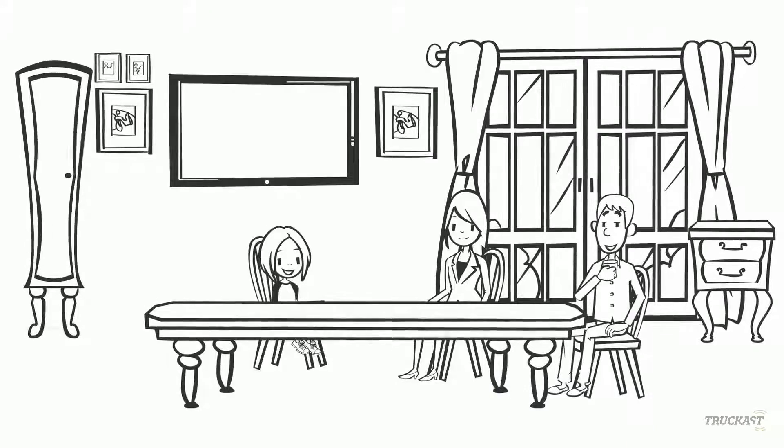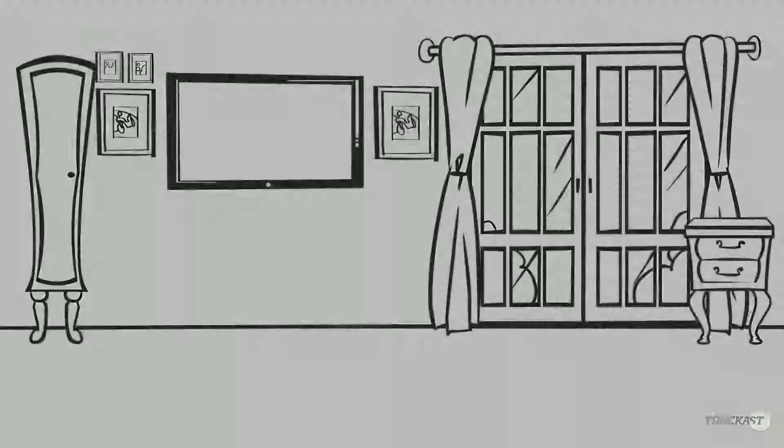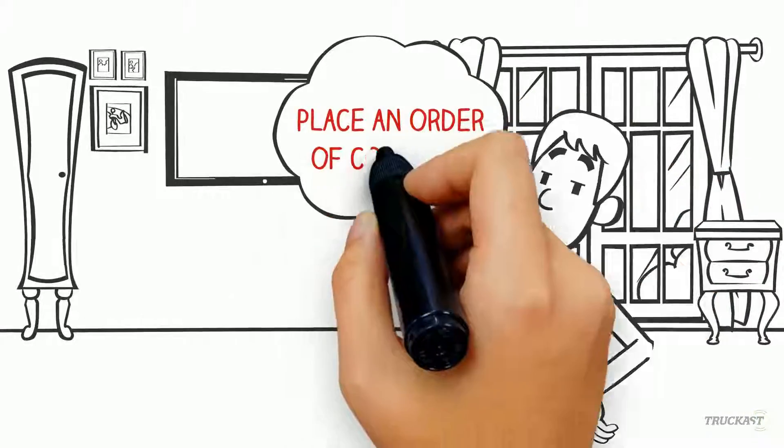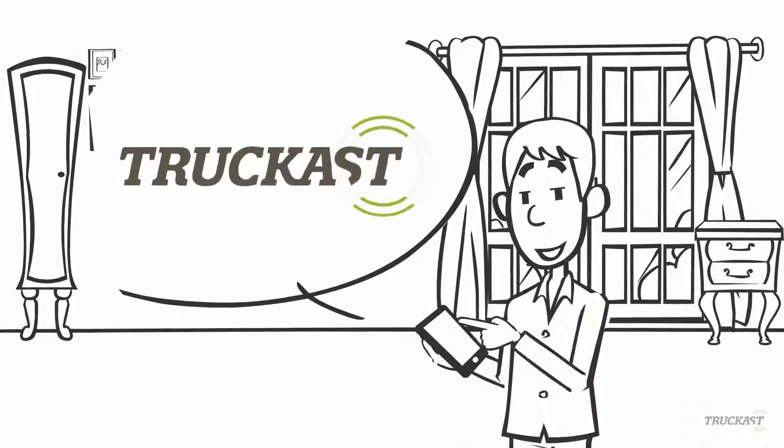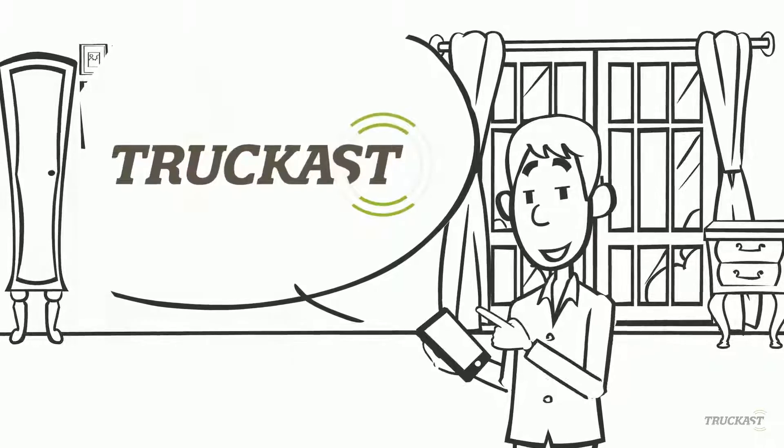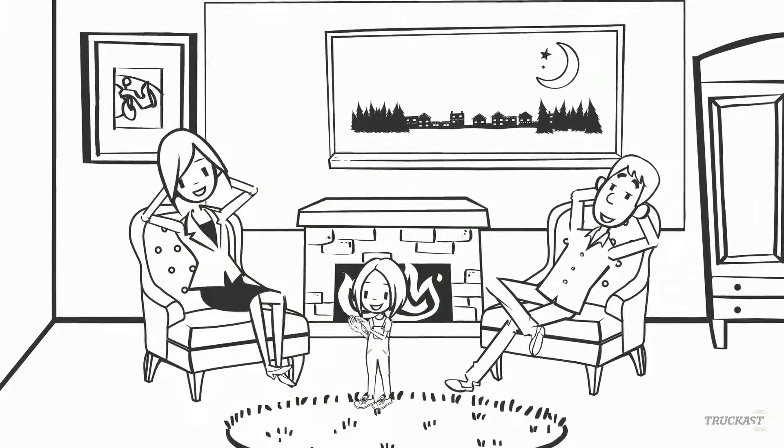We now see Matt at home watching TV with his family. Matt realizes that he forgot to place an order for concrete. Not to worry. Matt pulls out his smartphone and enters his order in TruckCast. Now Matt can enjoy the rest of his evening with his family.